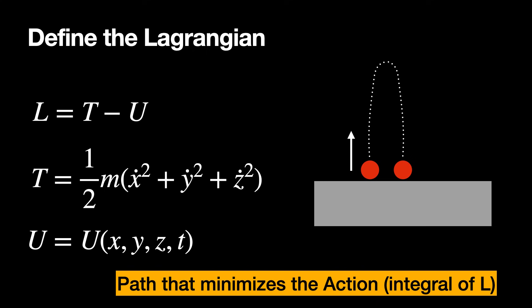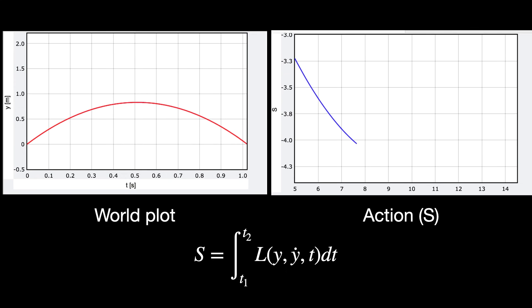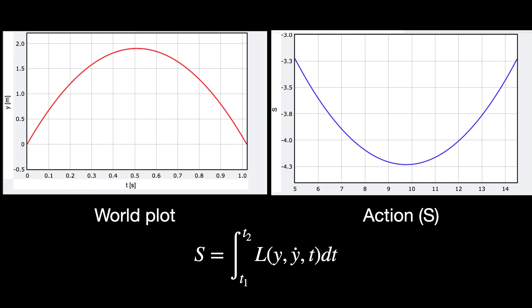I'm going to calculate the action for different paths for this ball in one dimension. On the left is a ball thrown in the air, shown as Y versus time with different parabolas — they all end at the same point in time but have different initial velocities and accelerations. These are different paths. On the right is a calculation of the action, and you can see there is a minimum — that's the path the ball would really follow.